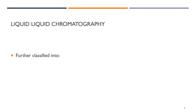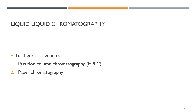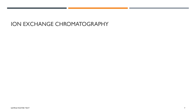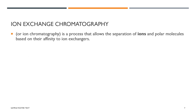Liquid-liquid chromatography is further classified into partition column chromatography, HPLC, and paper chromatography. Ion exchange chromatography is a process that allows the separation of ions and polar molecules based on their affinity to the ion exchanger.